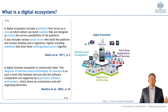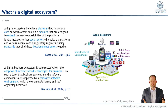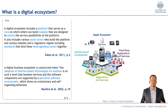Let's look at the definition again. A digital ecosystem includes a platform — here, the platform is the hardware device, for example the iPhone — and this platform serves as a core, depicted at the center, on which others can build modules designed to extend the service possibilities of the platform. The pure smartphone itself isn't worth much without the operating system, without the App Store, and without all the apps on it. These software components are the modules which build on the core and extend the possibilities of the hardware device.